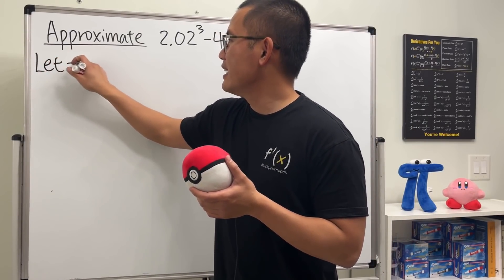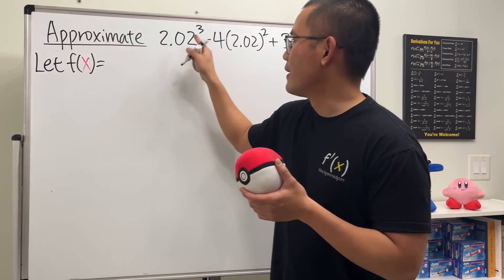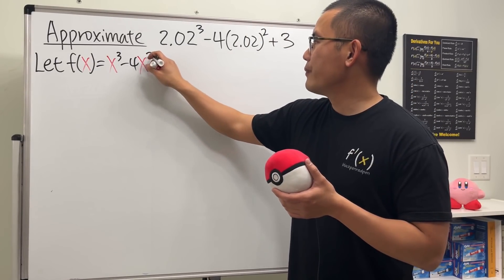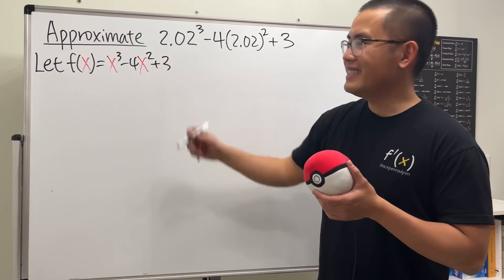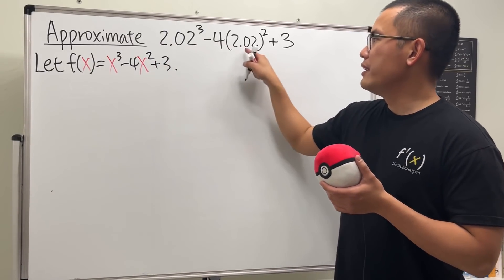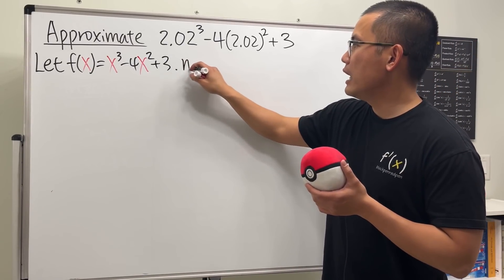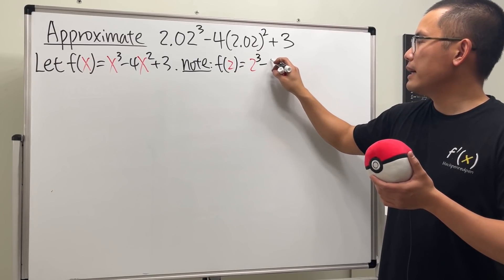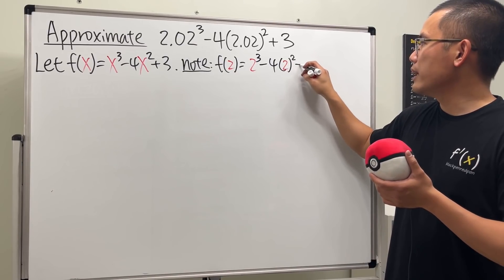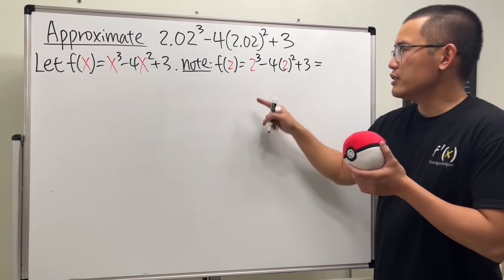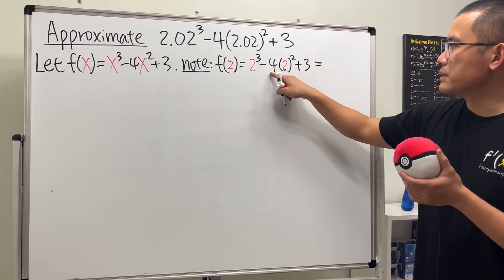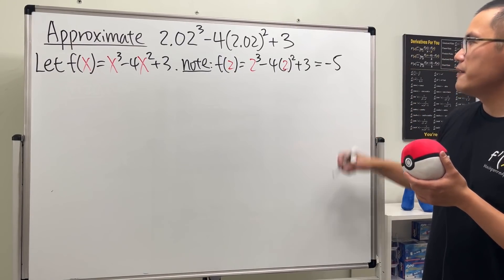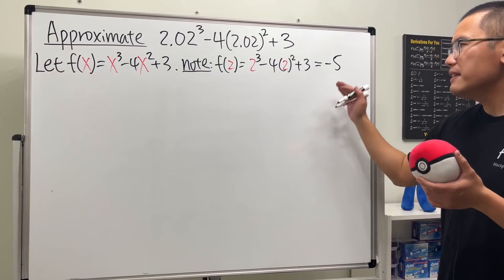Let f(x) = x³ - 4x² + 3. Notice that if x equals 2, we just need f(2). That's 2³ minus 4 times 2² plus 3 — which is 8 minus 16 plus 3, equals negative 5.